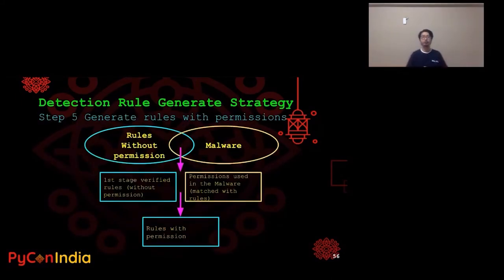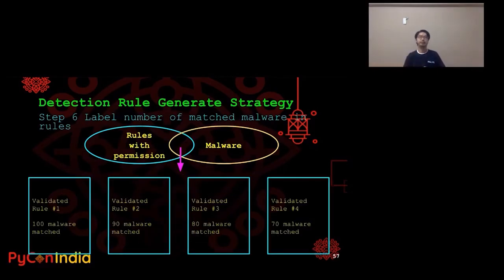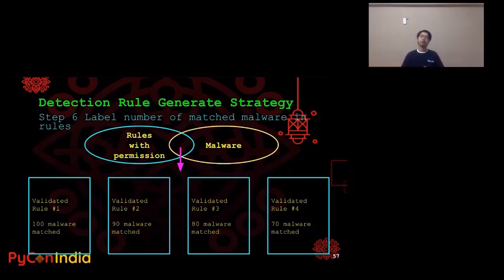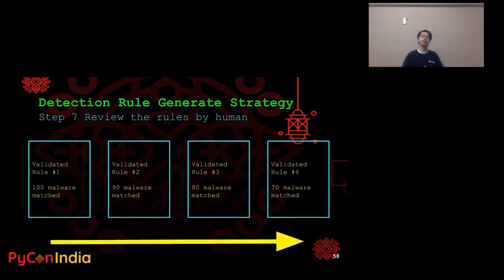In step five, we try to generate rules with permissions. Inside the intersection, we have first-stage verified rules matched with malware. We use those first-stage rules and the permissions in the matched malware to generate rules with permissions — the second-stage rules. In step six, we use the full-function version of Quark Engine to find the intersection of the second-stage rules (with permissions) and the malware we prepared. For each rule, we label the number of matched malware — for example, behavior rule number one was found in 100 malware samples. Finally, step seven: after labeling the rules, we sort them by number of matched malware and reveal the rules from the highest-matched ones first.